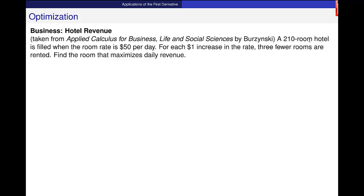A 210 room hotel is filled when the room rate is $50 a day. For each $1 increase in the rate, three fewer rooms are rented. So the rate goes up and you don't get as many people staying there. Find the room that maximizes daily revenue.